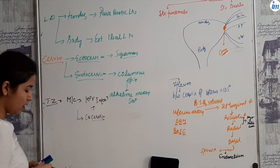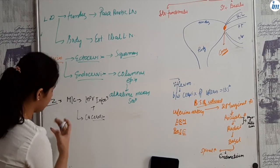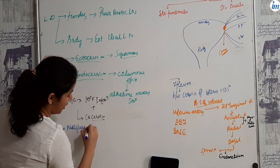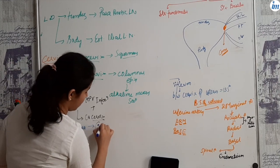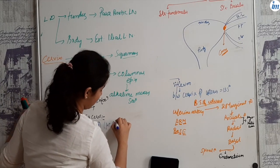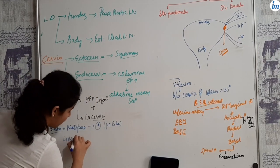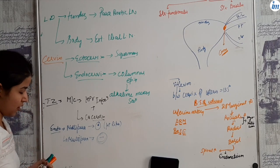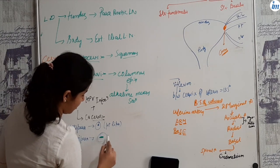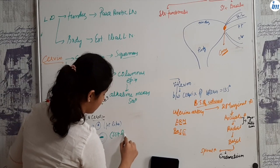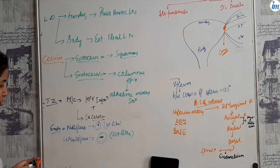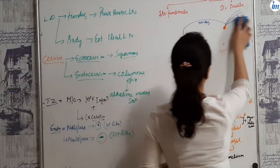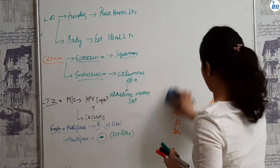About endocervix, just remember in nulliparous women, the endocervix is point-like. In case of multiparous women, it is slit-like.